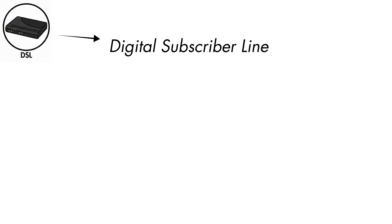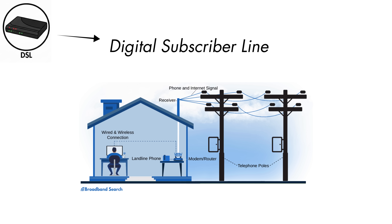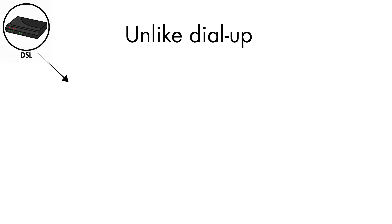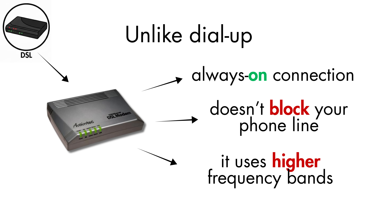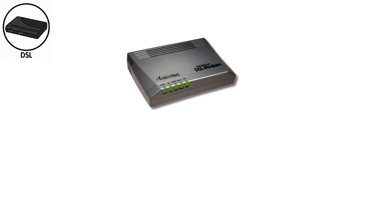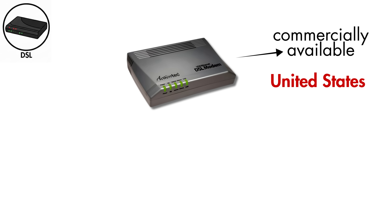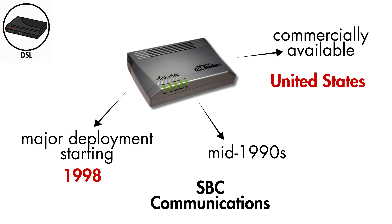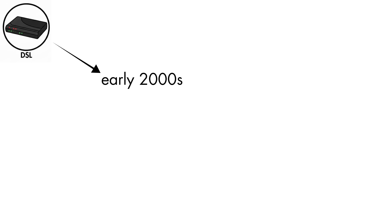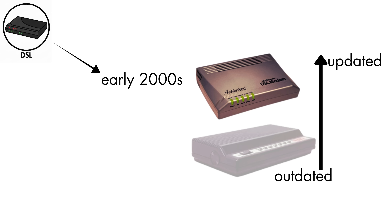DSL, Digital Subscriber Line, is a family of technologies that sends digital data over the same copper telephone lines used in most homes. Unlike dial-up, DSL gives you an always-on connection and doesn't block your phone line, because it uses higher frequency bands that voice calls don't touch. DSL first became commercially available in the United States in the mid-1990s, with major deployments starting around 1998, and became popular in the early 2000s as a major upgrade from dial-up.